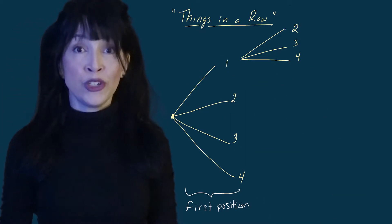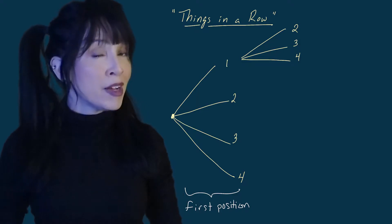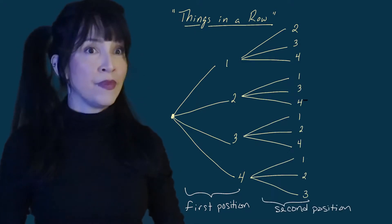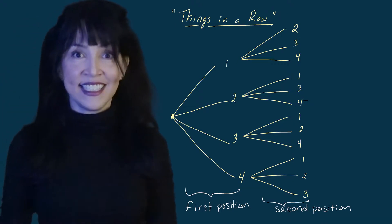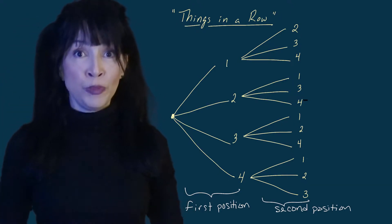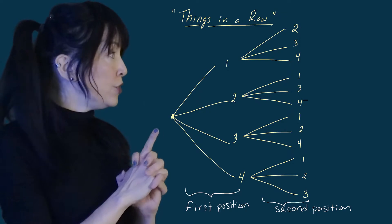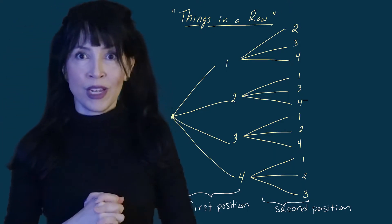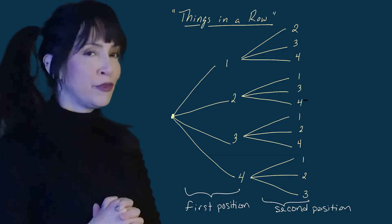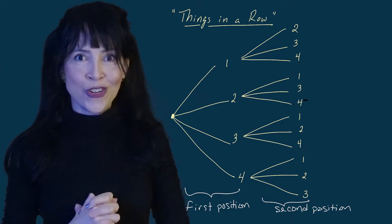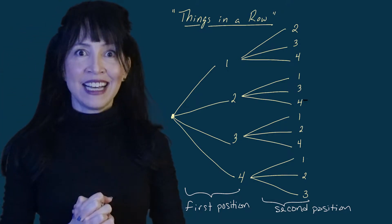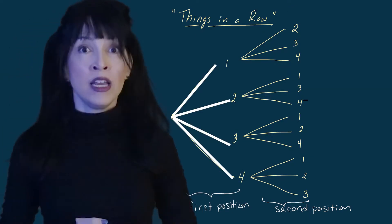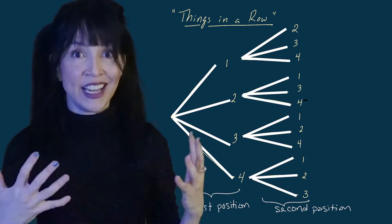Equivalently, if I put person two in the first position I have three possibilities for the second position: person one, three, and four. So filling just two positions I already have twelve partial arrangements — one-two, one-three, one-four, two-one, two-three, two-four, three-one, three-two, three-four, four-one, four-two, four-three — and that's twelve. You can count that by multiplying these four branches by the three branches at the end of each branch.